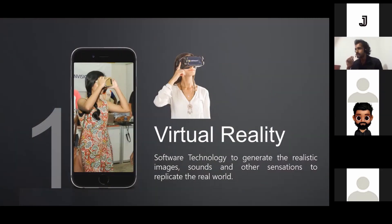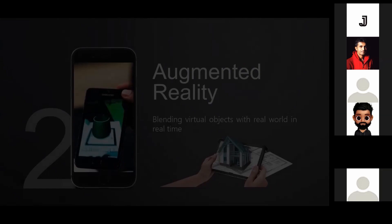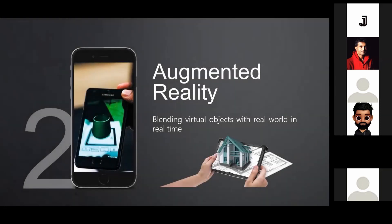First, a brief introduction about Virtual Reality. Virtual Reality is a software technology that can generate realistic images, sounds, and other multimedia sensations for humans, and it actually replicates the real world. With Virtual Reality, you can generate a real-world-like scenario and surrounding, but it's completely artificial. Now for Augmented Reality - with AR, you are not creating a completely virtual world. Instead, you're trying to blend your virtual content with reality.